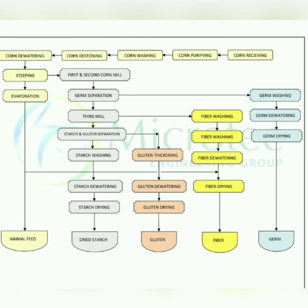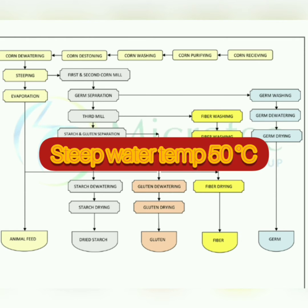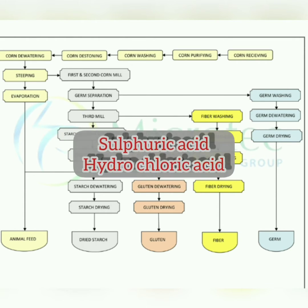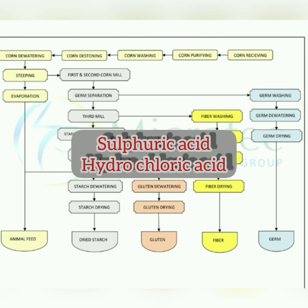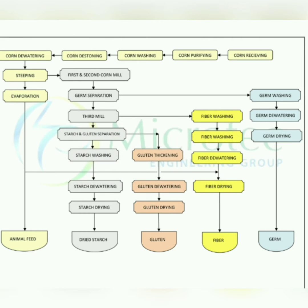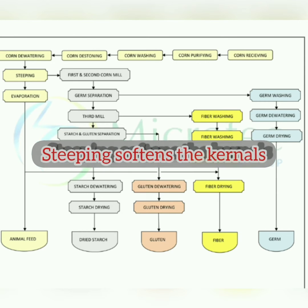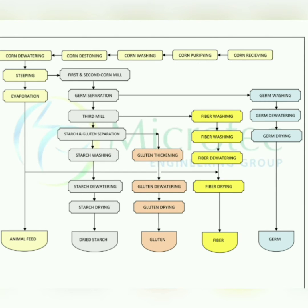The steep water is at 50 degrees Celsius and the pH of the water is 4, achieved by adding sulfuric acid or hydrochloric acid. These conditions help in optimal water absorption of the corn kernel, controlled fermentation by lactic acid bacteria, and loosening of protein matter.